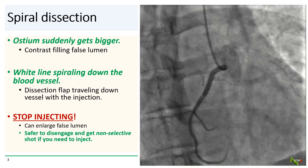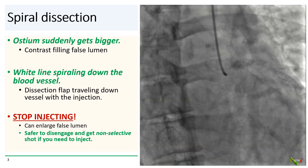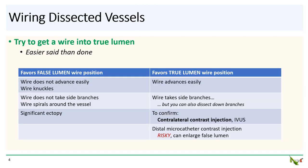So now what are we going to do with the spiral dissection? You have to get a wire into the true lumen — this is much easier said than done. Part of the reason is that it can be very hard to tell for certain whether your wire is in the true lumen or in the false lumen. But there are some rules of thumb. If your wire doesn't advance easily, if you have to push hard, then you are in the false lumen.